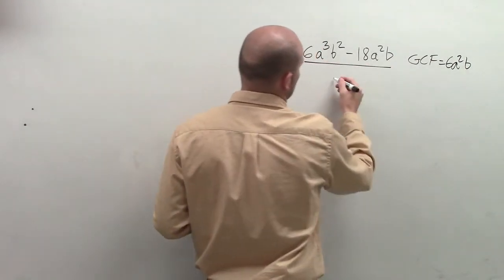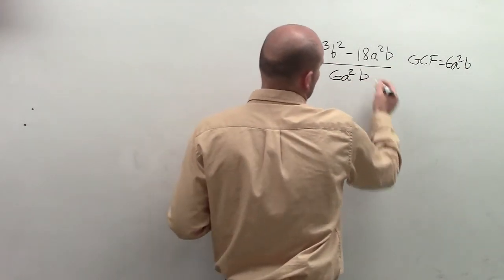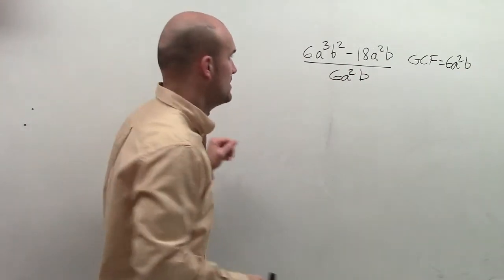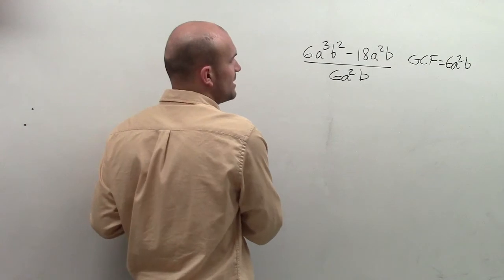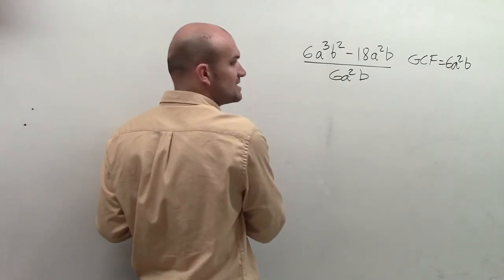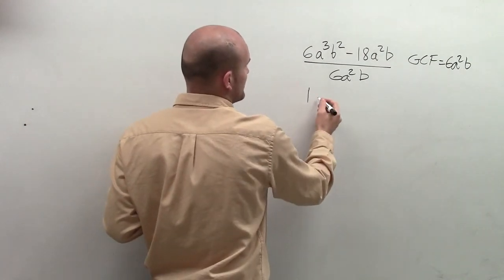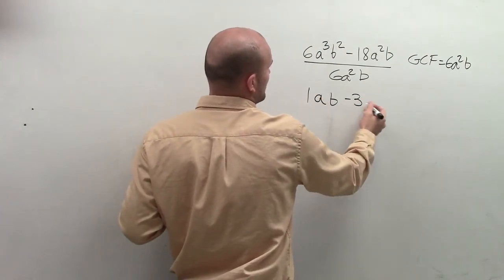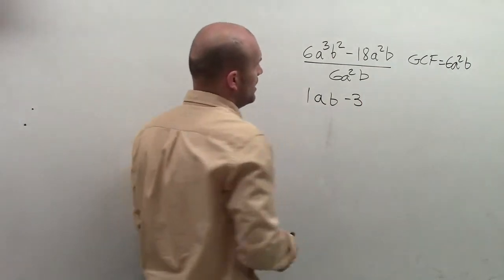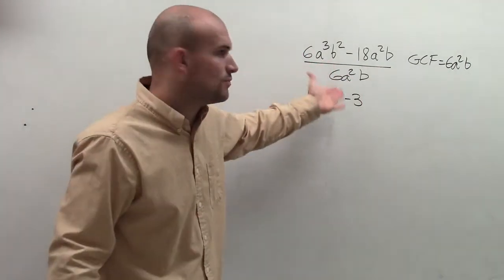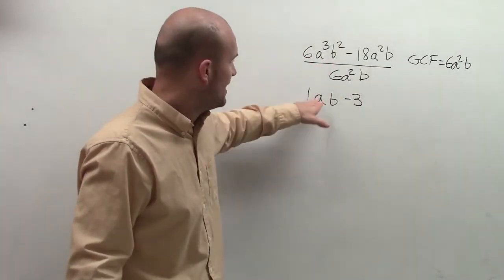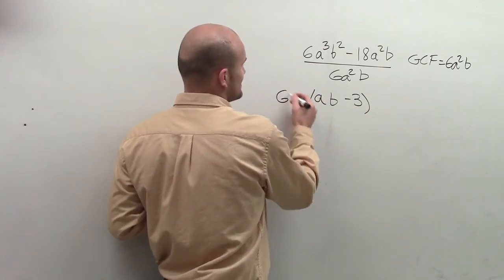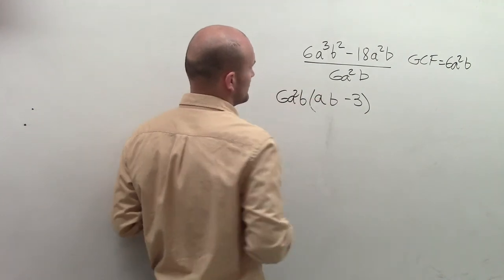So what we simply do is divide each one of these terms by the GCF and see what we can pull out. When I have 6a³b² divided by 6a²b, I'm left with ab. Then a² divided by a² is 1, and b divided by b is 1 — I don't really need to write the 1. So now I can write this as a product of 6a²b times (ab − 3). That's my final answer.